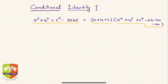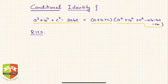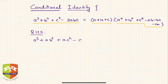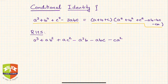The proof is very easy. Start from the RHS and simply expand it. Opening the brackets, you get a³ + ab² + ac² - a²b - abc - ca².